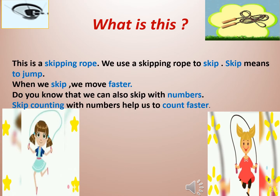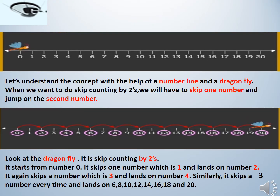Before starting our topic, let me ask you a very simple question. Do you know what this is? This is a skipping rope. As you can see in these pictures, the girls are skipping. We use a skipping rope to skip, and skip means to jump. When we skip, we move faster. Did you know that we can also skip with numbers? Skip counting with numbers helps us to count faster.